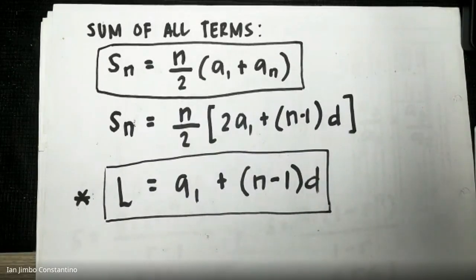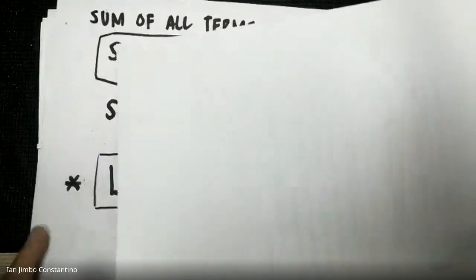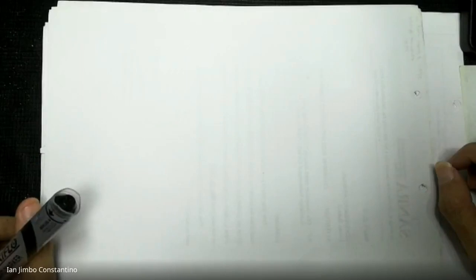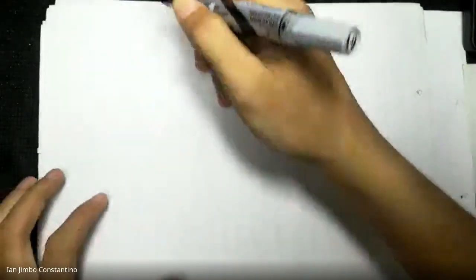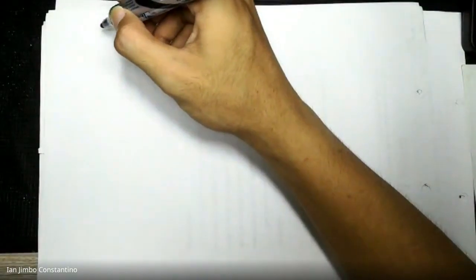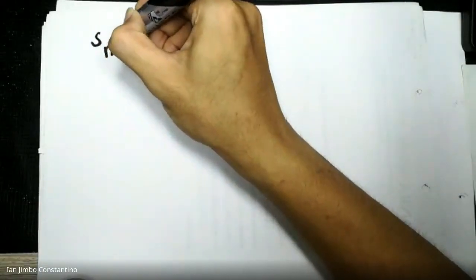Now let us solve number 24. In a pile of logs, each layer contains one more log than the layer above. The top contains one log. If there are 105 logs in the pile, how many layers are there? We are given the total number of logs, so Sn = 105.